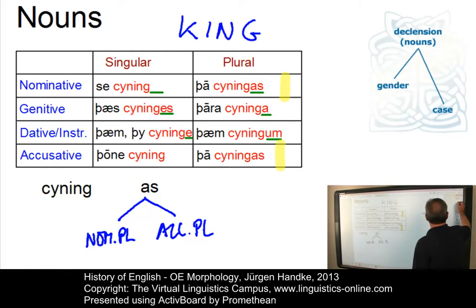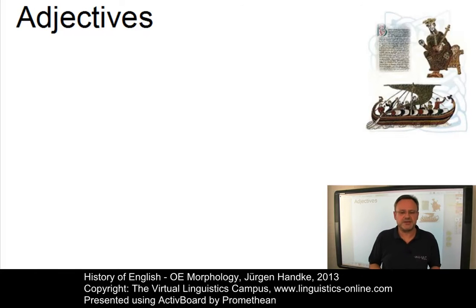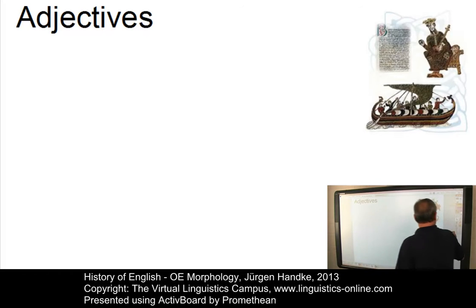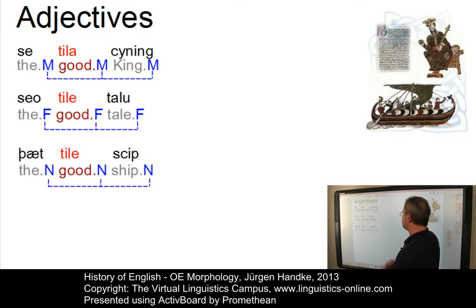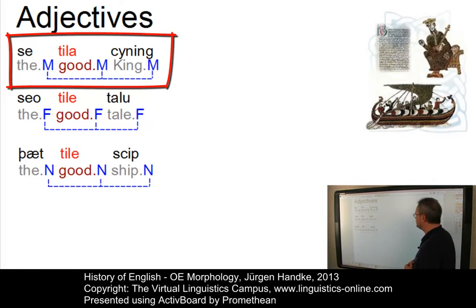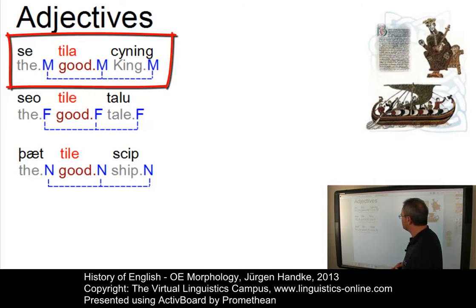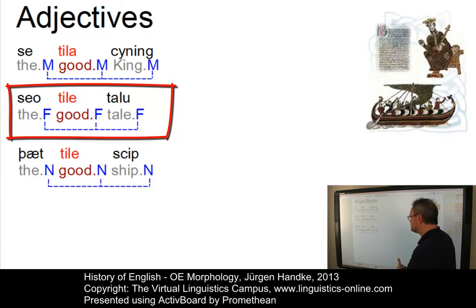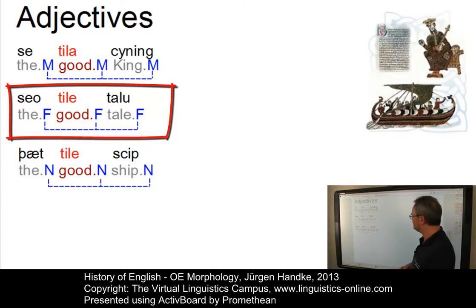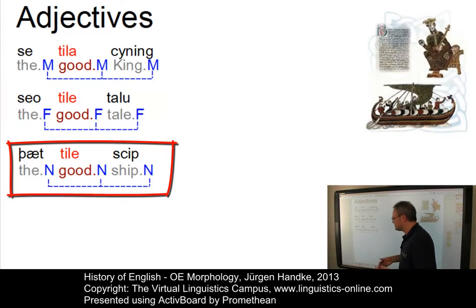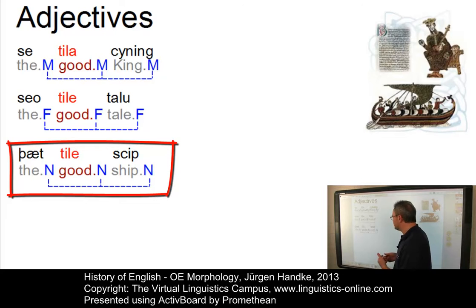Let's look at adjectives next. The adjective was the most highly inflected category of Old English. It followed the noun in terms of gender, case and number. Here are three examples that illustrate this effect. We have 'se tila cyning,' the good king, where 'cyning' is masculine and consequently the determiner and the adjective are masculine too. 'Seo tile talu,' the good tale, is feminine, and again we have a feminine form of the adjective 'tile' and a feminine form of the determiner. And 'þæt tile scip,' ship is neuter, and the two other items are marked with the neuter gender form.